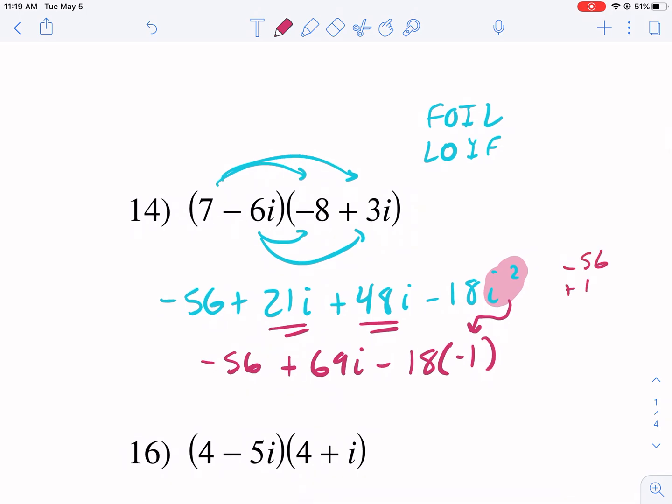So essentially, we have -56 + 18. That's going to give us, what is that? 38, but negative. -38 + 69i, and there's our answer.